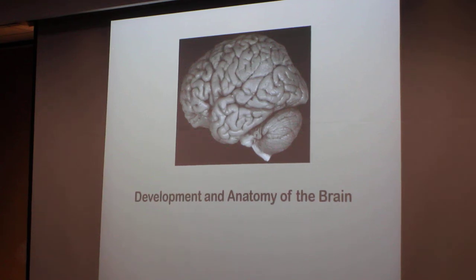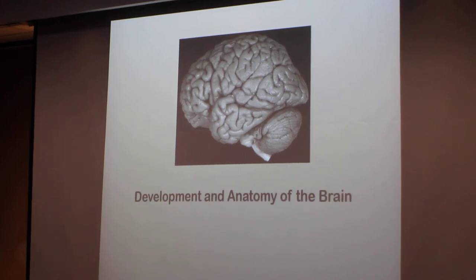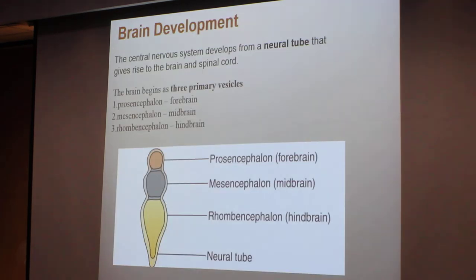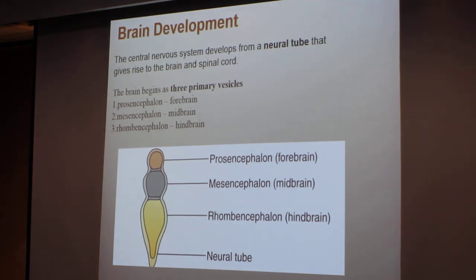You don't have to read anything else. It's a very basic thing, and I know you're taking anatomy now so it's going to be easy for you to figure out what you're going to say today. So, brain development: the central nervous system develops from the neural tube.